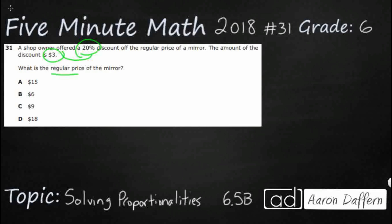That is going to be very important for us to set this up the correct way. Our proportionality is always going to look like this: when you get a part over the whole, or part over total, that is going to be our ratio, and we always look at it as a fraction — numerator over denominator — and that equals our percent.